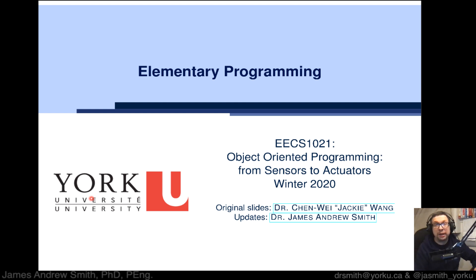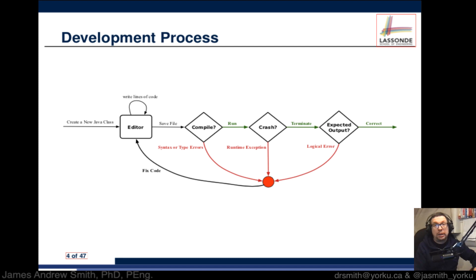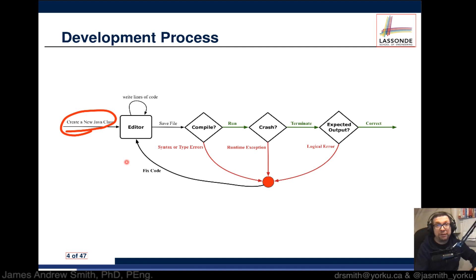Today we're going to start a series on elementary programming for EECS 1021, the object-oriented programming course from sensors to actuators. We'll start with a general intro to Java, beginning with the steps in development. When working on problems in this course, you'll start by creating a new Java class, which typically means using an IDE like IntelliJ or Eclipse to write a programming solution.